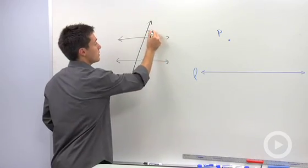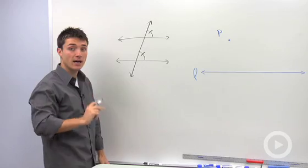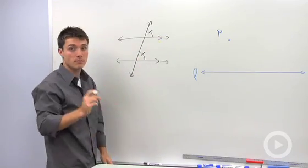and I tell you that one pair of corresponding angles are congruent, then the converse of the parallel lines theorem says that these two lines must be parallel.